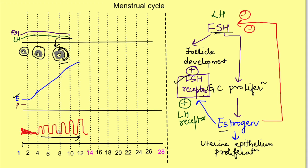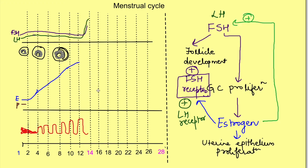The link between ovarian and uterine events: FSH causes follicle development, the follicle releases estrogen, and estrogen in turn affects FSH, LH, and the uterine epithelium. By day 12 estrogen reaches a very critical level, and at this point the effect of estrogen on LH and FSH changes — instead of negative feedback it becomes positive feedback. So after a certain concentration of estrogen is reached, it causes a positive feedback effect on LH and FSH.